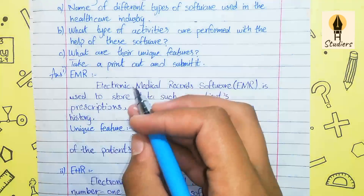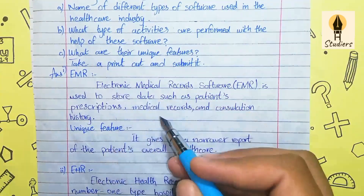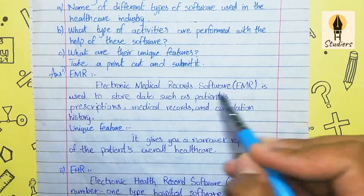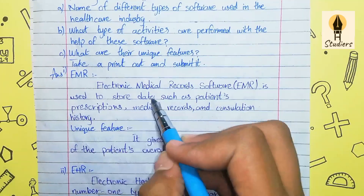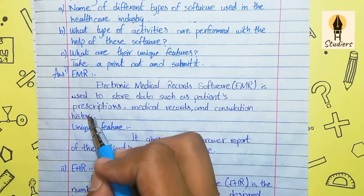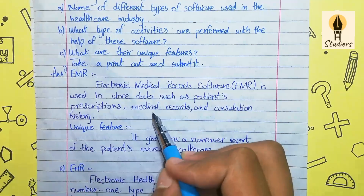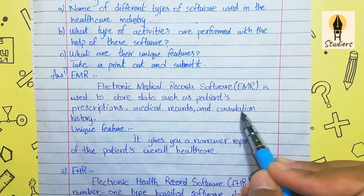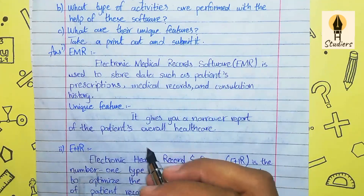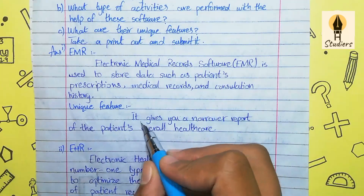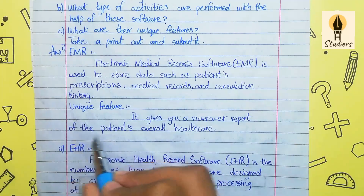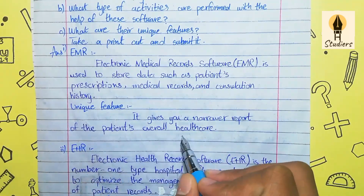Number one: EMR — Electronic Medical Records software. EMR is used to store data such as patients' prescriptions, medical records, and consultation history. Its unique feature is that it gives you an error-free report of the patient's overall healthcare.